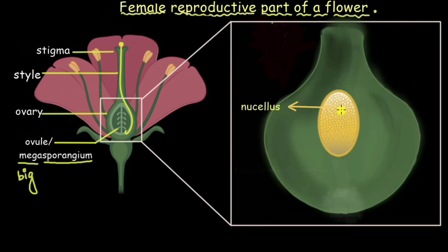And they are so important because one of the cells from these nucellar cells grow and develop into a female gamete or female spore.